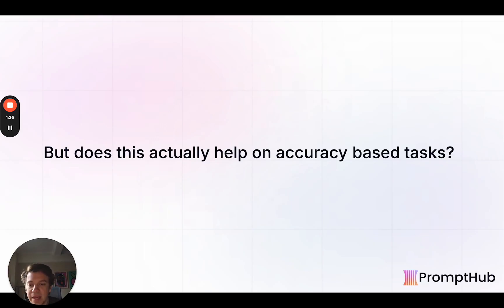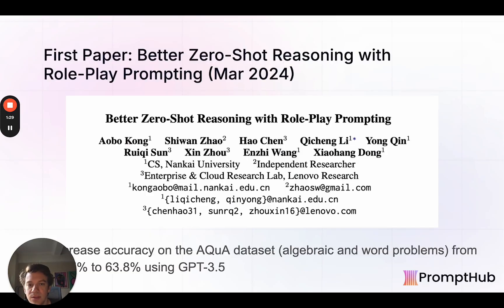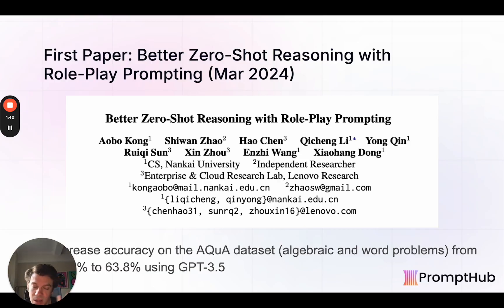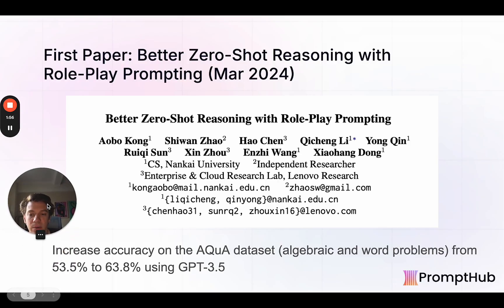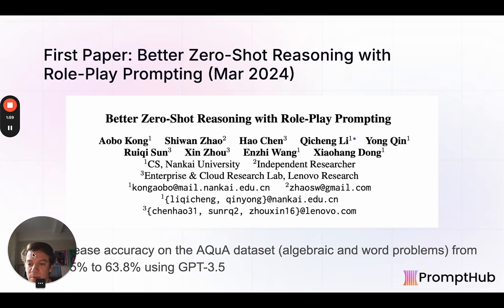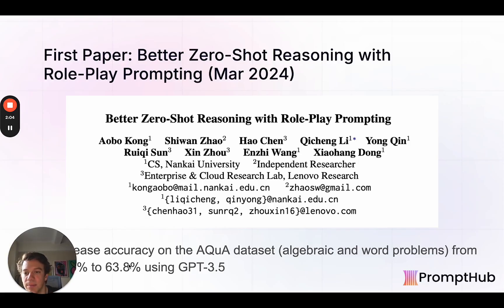But what about tasks where you're focused on accuracy? The first paper is called 'Better Zero Shot Reasoning with Roleplay Prompting,' from March 2024. The only caveat is they used GPT-3.5, so it's hard to take away the same findings if we're using a much more capable model. But they talk about a pretty big increase — 53% to 63% on the Aqua Dataset, which is an accuracy math-type dataset.